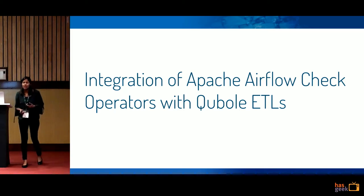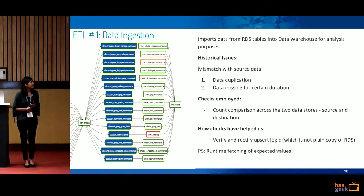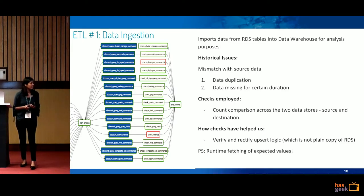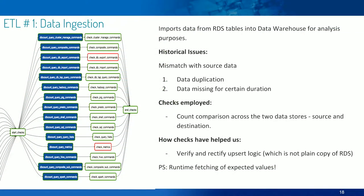Now, how we've integrated these operators with our ETLs. The first ETL is data ingestion — we're importing data from RDS into our data warehouse for analysis. It's not a simple plain copy; we've added filtering logic and some upsert logic in Hive. Historically we faced issues like mismatches with source data, duplication, and missing data for certain durations due to bugs. The checks we've employed here include count comparisons across two data stores — source and destination — using the runtime approach described earlier. These checks have helped us verify and rectify our upsert logic.